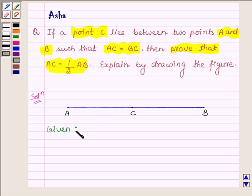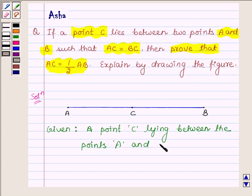We are given a point C lying between the points A and B, such that AC is equal to BC.